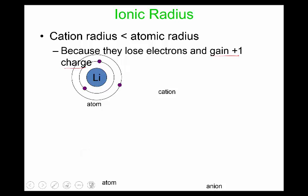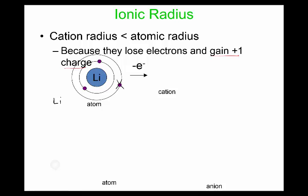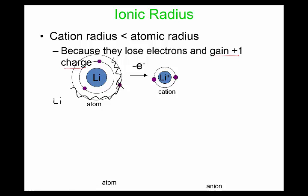Here we have a regular lithium atom. After it loses its electron, this electron goes away, and you actually lose this entire shell. So it goes away, and as you can see, the radius got a lot smaller.